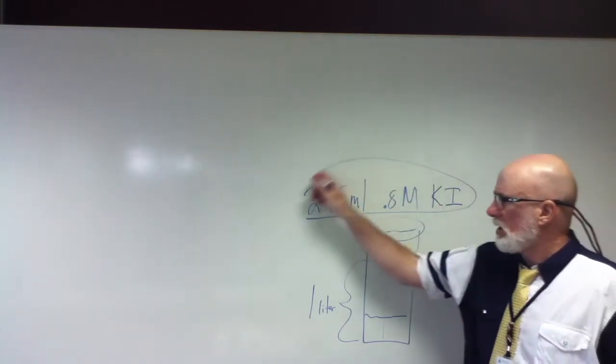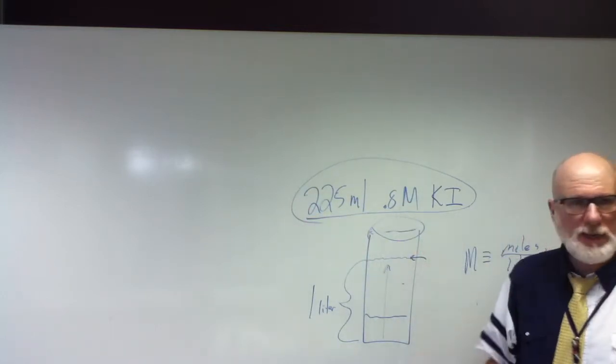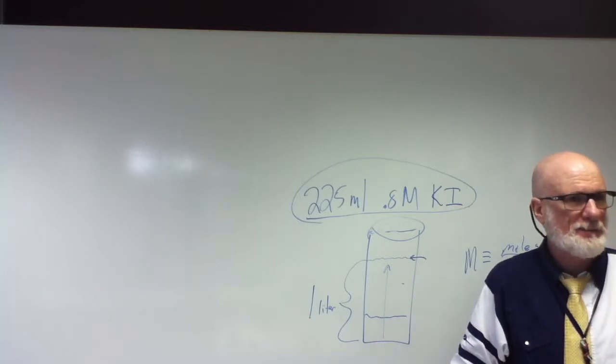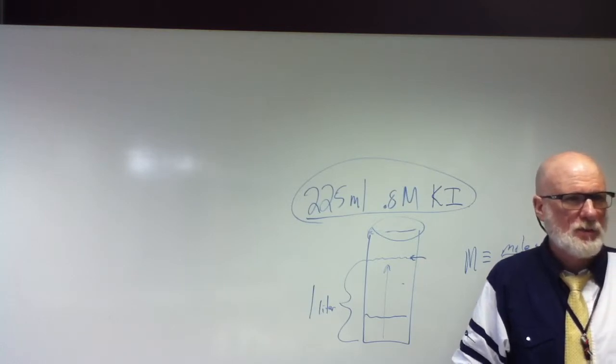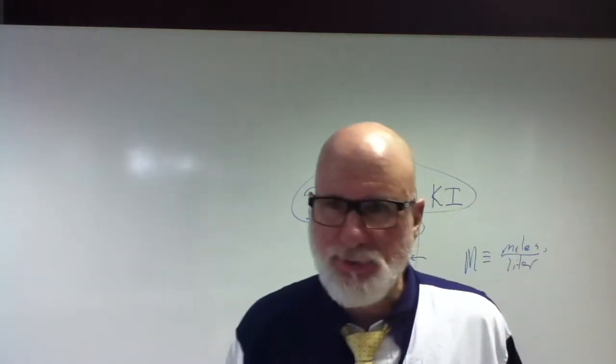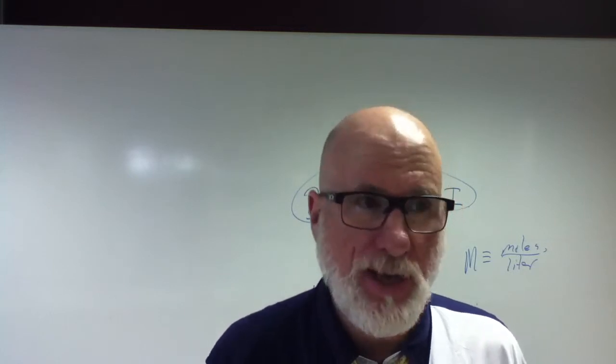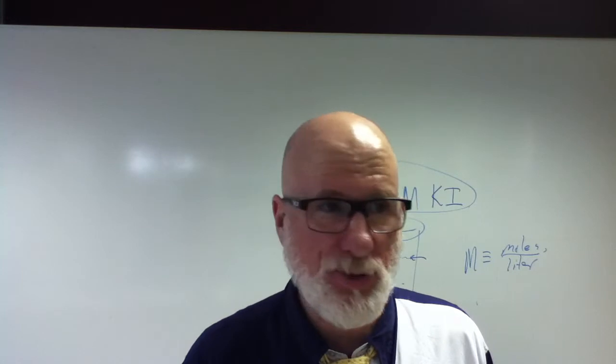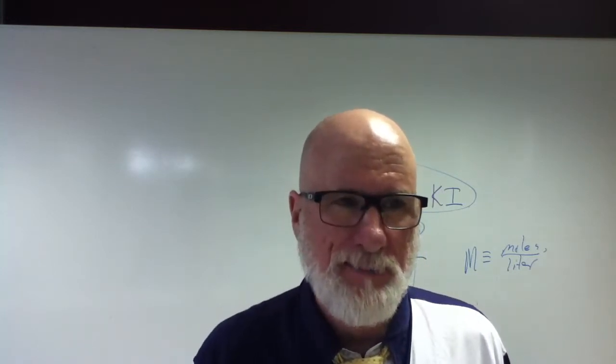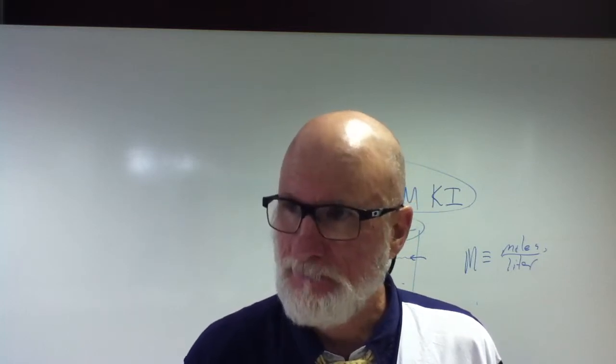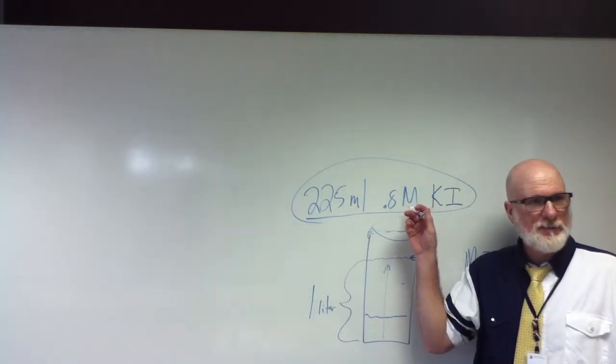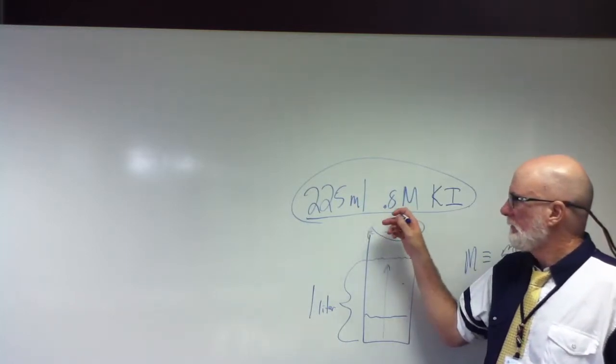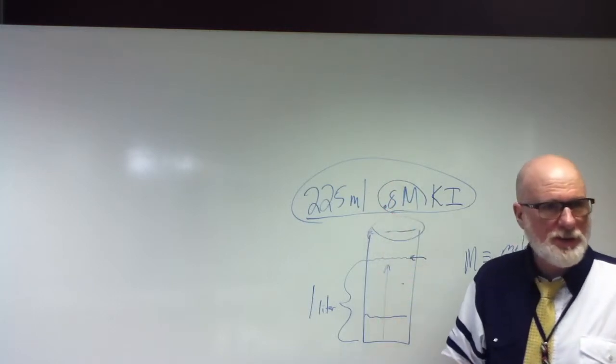So in other words, how many moles are there in 225 milliliters of a 0.8 molar solution of potassium iodide? Anybody figure out how to do that? Well, you could use the dilution equation, M1V1 equals M2V2. Or you could just reason it out conceptually. I'm making a molar solution. I know the volume, it's 1000 milliliters. But what's the number of moles?